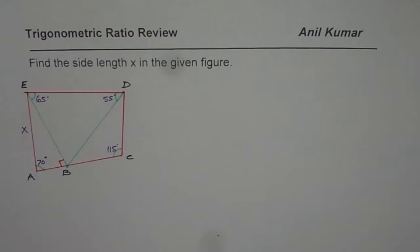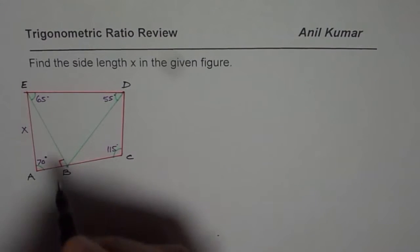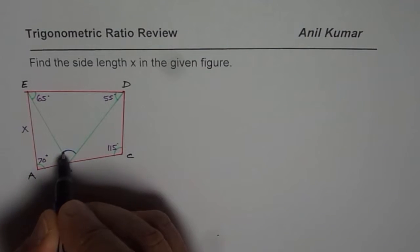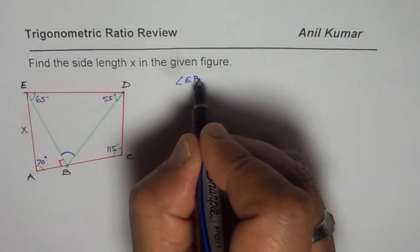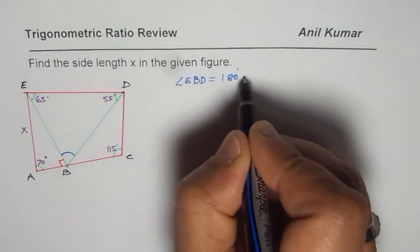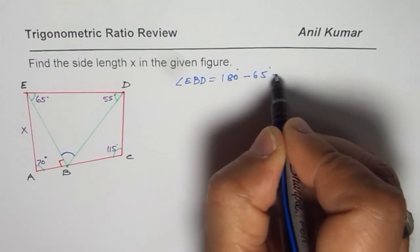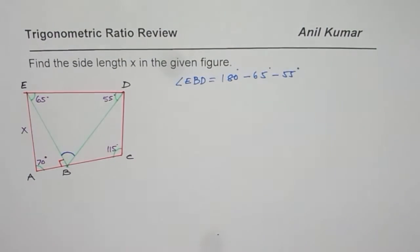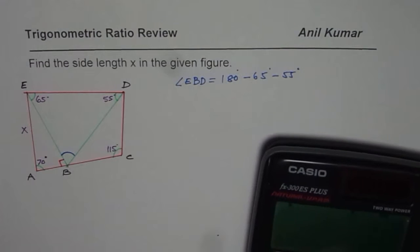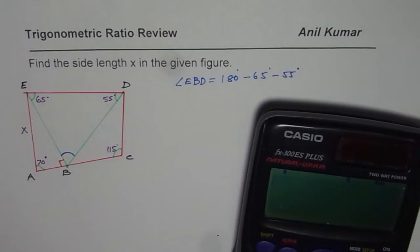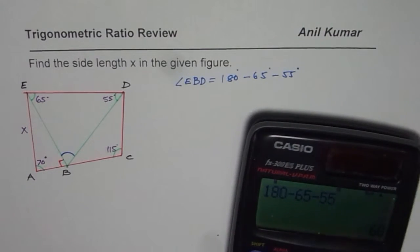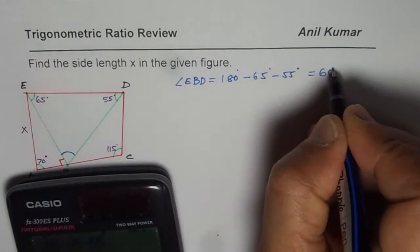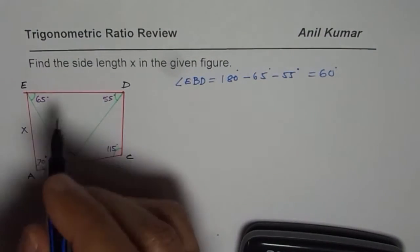Let us begin by finding angle EBD. Angle EBD equals 180 degrees minus 65 degrees minus 55 degrees, since we have triangle EBD and the sum of angles in a triangle is always 180. So 180 minus 65 minus 55 equals 60 degrees. We get 60 degrees here.